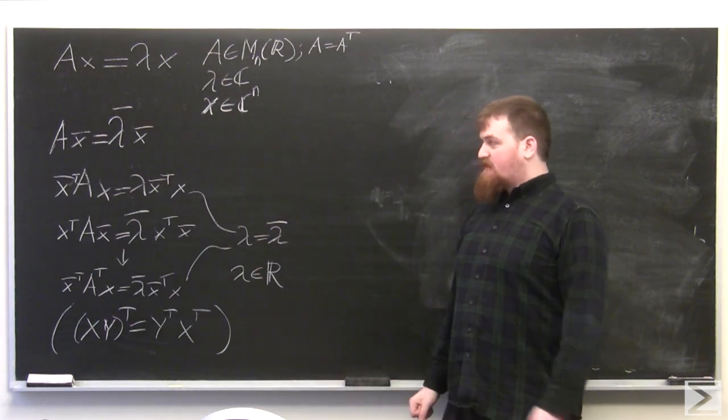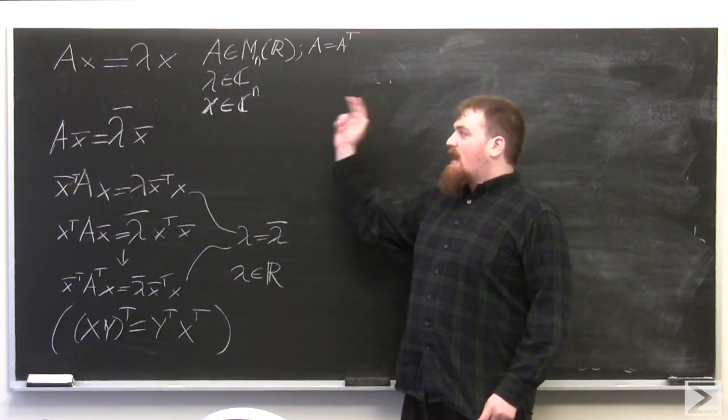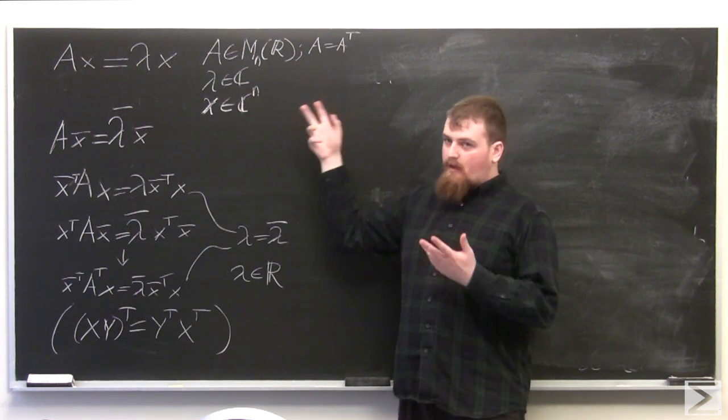Let's let A be a symmetric square matrix of size N over the reals, which has an eigenvalue lambda and an eigenvector X, both in general complex.